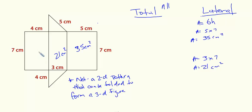And then my last rectangle is four by seven centimeters. So we have base times height, four times seven, it's going to give me 28 centimeters squared.